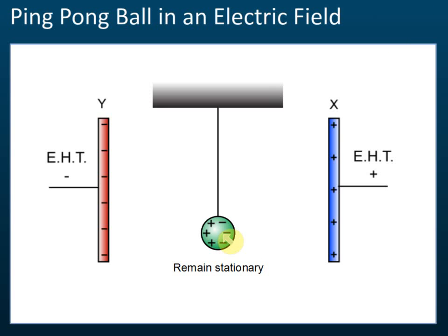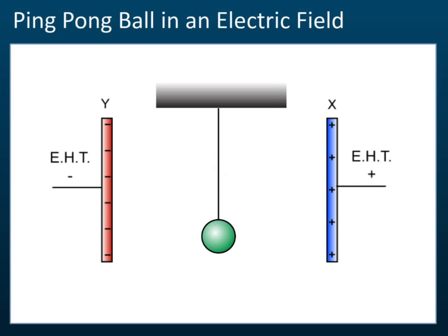The ping pong ball will remain stationary because there are forces exerted on it, but the magnitude of the force is the same to the left and to the right. The force to the right equals the force to the left, so it will remain stationary.